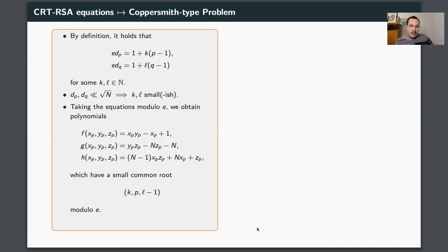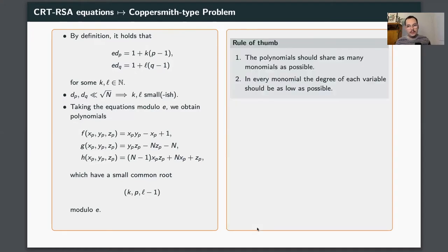Before applying Coppersmith's method, I want to explain why we chose exactly these three polynomials. In Coppersmith's method, you always want to satisfy two rules of thumb: first, your polynomials should share as many monomials as possible; and second, in every monomial the degree of each variable should be as low as possible. We believe that with respect to these two rules, our three polynomials F, G, H are the best obtainable from the CRT-RSA equations.